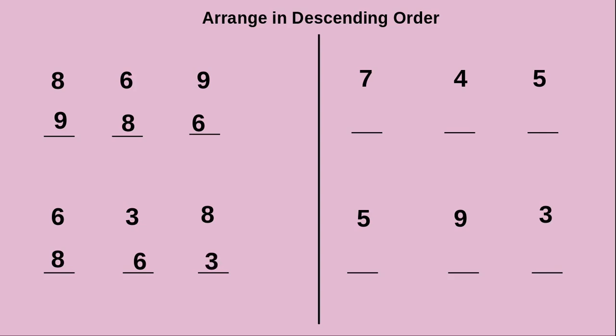Next we will see another example. They have given 7, 4, 5. Which is the greatest number here? 7 is the greatest number, so we write 7 first. After that the next greatest is 5. At last, 4 is remaining, so we write it as it is.